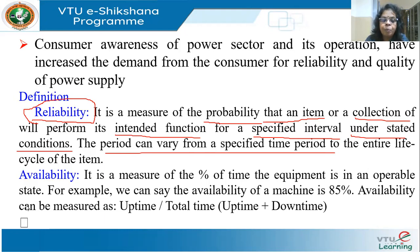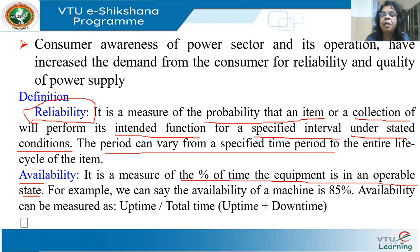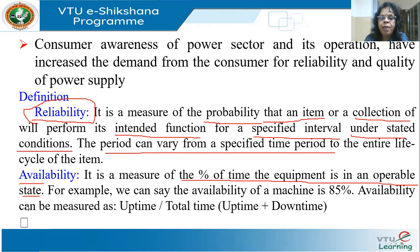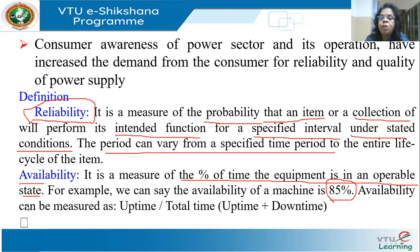Availability is a measure of the percentage of time the equipment is in an operable state. If the availability of a machine is 85%, it means 85% of the time it is available and there is a 15% downtime. Total time equals uptime plus downtime, so availability equals uptime divided by total time. Over a window of one or more years, 85% of the time it is available and 15% it is not, for whatever reasons.